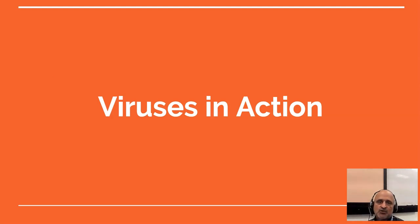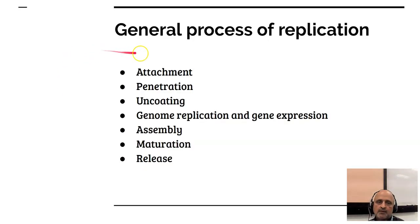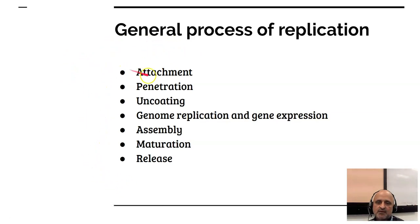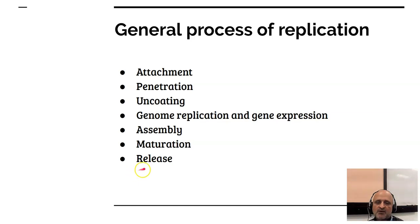Some viruses also express proteins which interfere with or silence the host RNA interference pathway, enabling them to overwhelm hosts. Now let us look at how viruses actually function within the host. The stages of virus replication are: first, attachment; second, penetration; third, uncoating; fourth, genome replication and gene expression; then assembly, maturation, and release. Please note that this is a general process — there may be specific processes associated with different viruses.